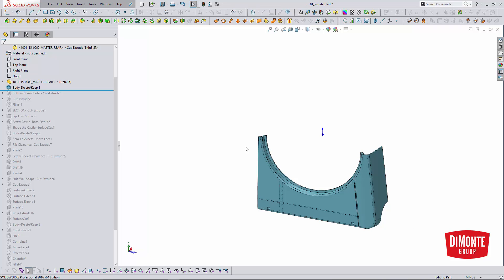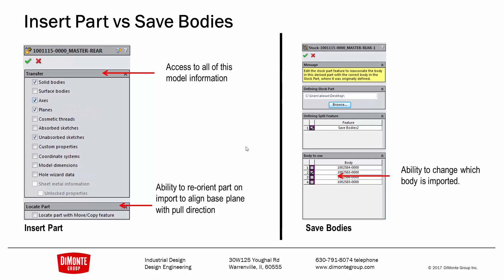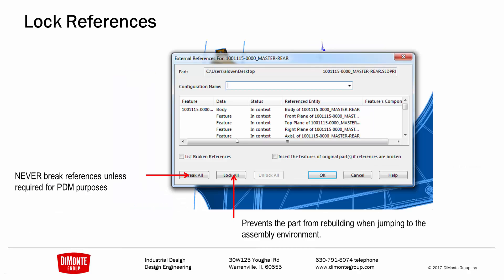Here we see the benefit of Insert Part versus Save Bodies: all of this extra SOLIDWORKS information we can bring into our part, versus only bringing in the bodies using the Save Bodies command. Once we've brought our parent part in and deleted the extra bodies with the Body Keep tool, we'll use the Lock All button to lock the external references, saving us rebuild times.